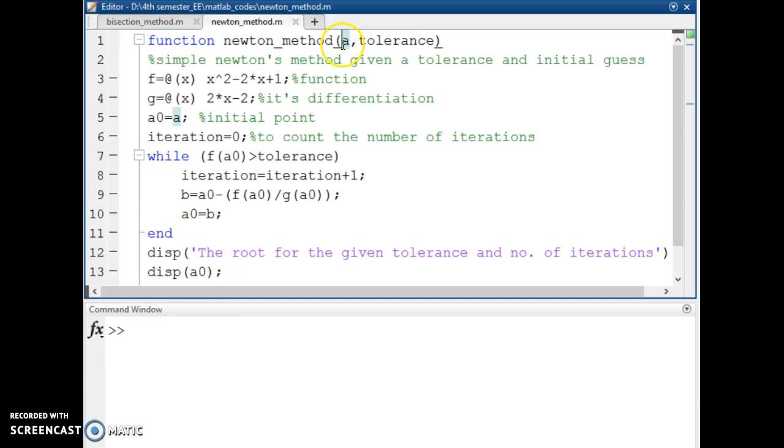I pass an initial guess which is somewhere around the root of the function. As we know the root of the function is at 1, I pass the initial guess as say 3, 4, 5 and so on.